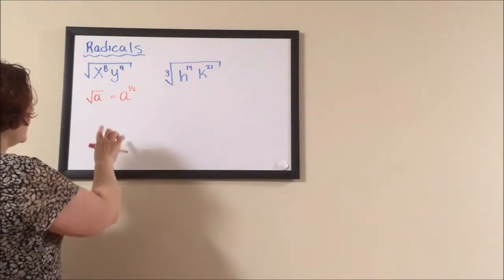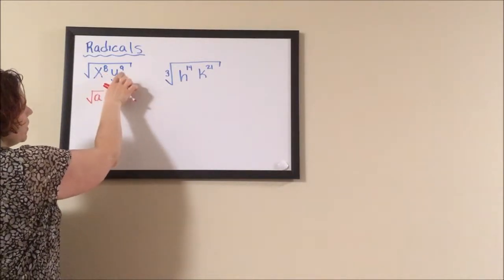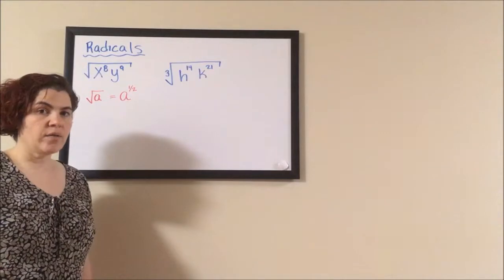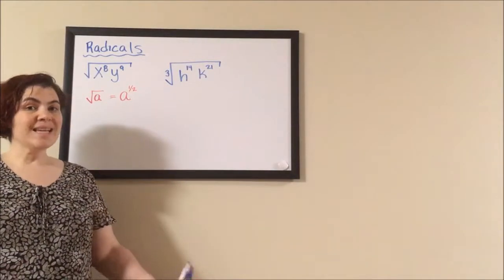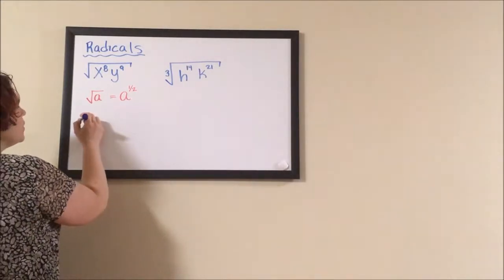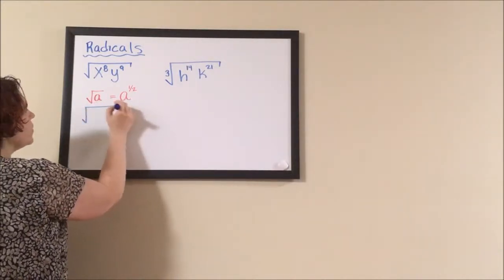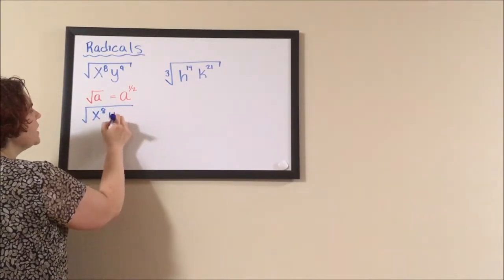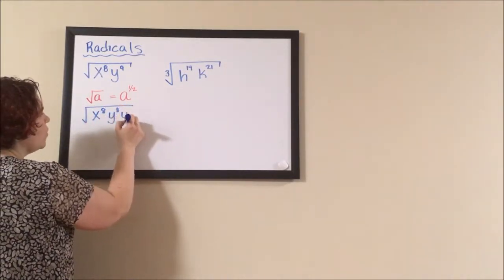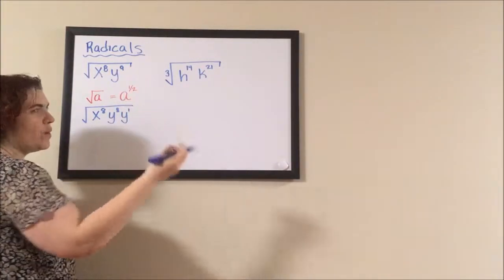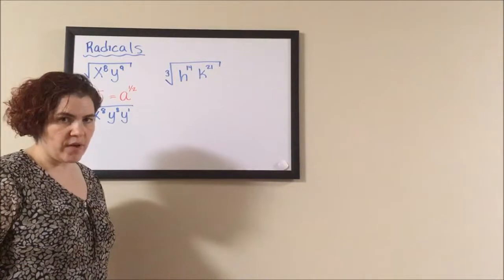It means that every exponent under the radical just needs to be divided in half. But wait, nine isn't even. So what we're going to do is I'm going to start off by rewriting this as the square root of x to the eight, y to the eight, y to the one, because eight plus one is nine. So I just pulled off that remainder before I divide.